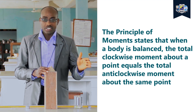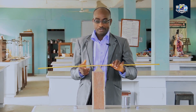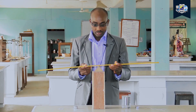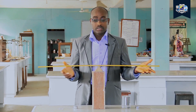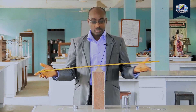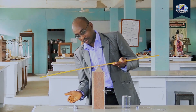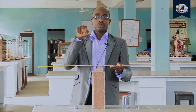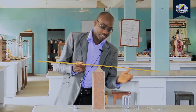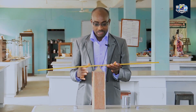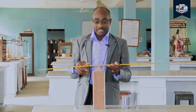From that definition, if I balance my meter rule at its midpoint, the forces acting on one end will turn the meter rule clockwise, according to the movement of a clock hand, while the forces on the other end will turn it anti-clockwise or counterclockwise. So if this meter rule is uniform, it is expected that it will balance at the midpoint.